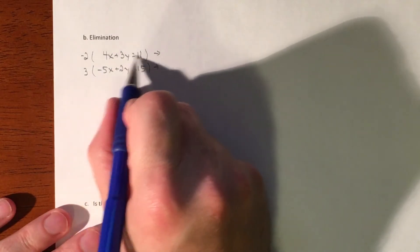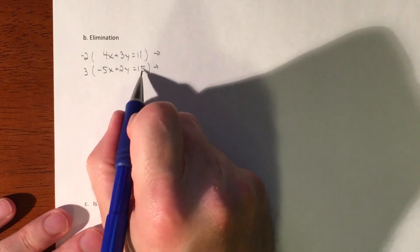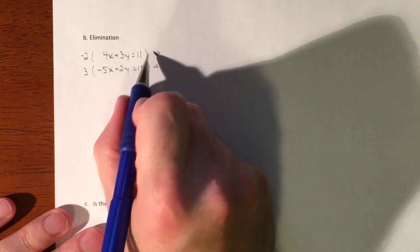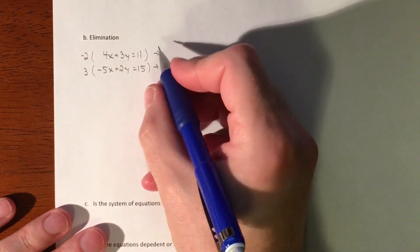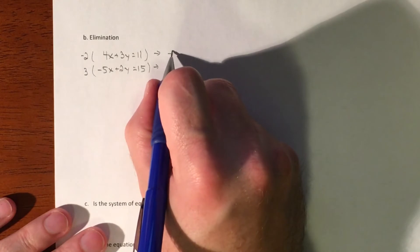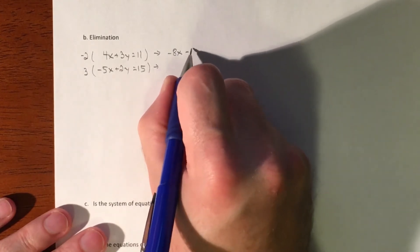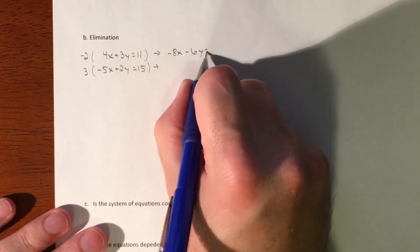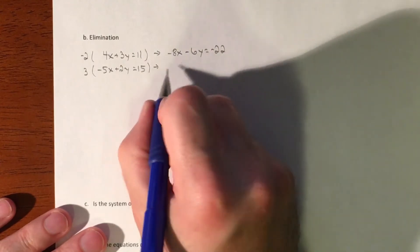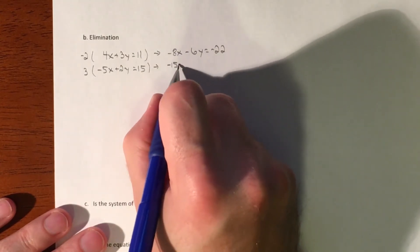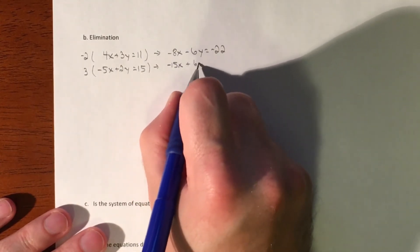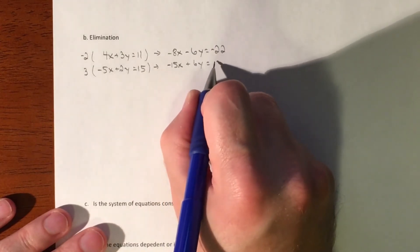Alright, so we're gonna distribute a negative 2 to everything and a 3 to everything. So we're gonna double everything, change all their signs, and we're gonna triple everything. So as long as you do it to everything, everything is consistent. So negative 8x minus 6y equals negative 22 and then negative 15x plus 6y equals 45.